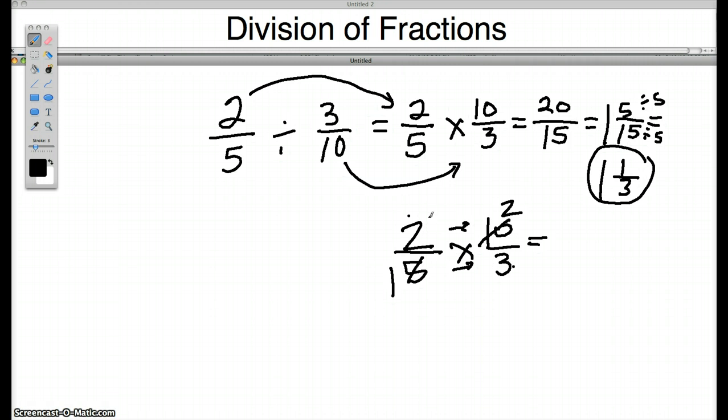Now when I multiply, I'm doing the 2 times this 2 because the 10's gone. 2 times 2 is 4. And then I'm multiplying this 1 because the 5 is gone. 1 times 3 is 3. And that's also an improper fraction, but it's a lot easier at this point because I do 4 divided by 3. 3 goes into 4 one time, remainder 1, and I keep the same denominator, 1 and 1/3.